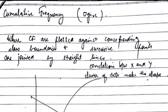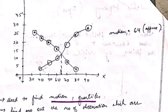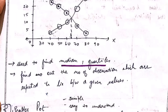Next is ogive, also known as cumulative frequency. When we plot cumulative frequency against the corresponding class boundaries and join successive points by straight lines, we get the ogive. As shown in the graph with an example, it forms a curve. Cumulative frequency can be used to find the median and the quartiles, and also the number of observations expected to lie between two given values.